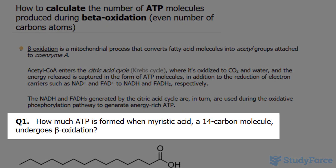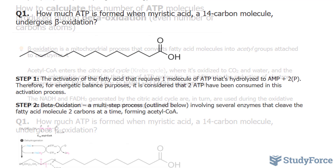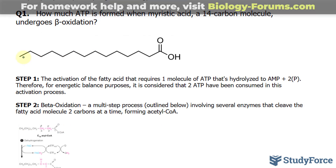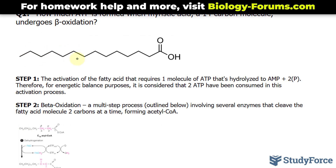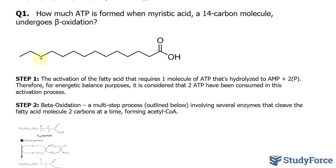The first question reads: how much ATP is formed when myristic acid, a 14-carbon molecule, undergoes beta-oxidation? Myristic acid is shown on your screen, and as you can tell, each of these vertices represents one carbon atom.